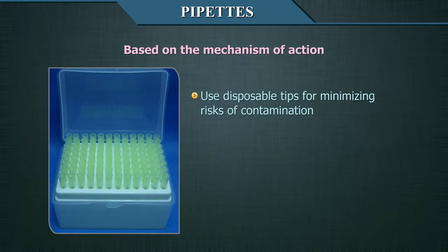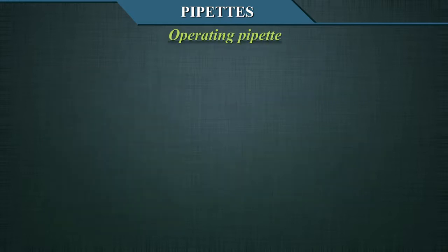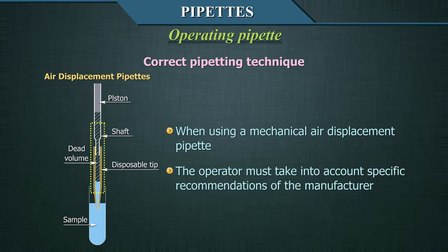It is important to use disposable tips to minimize the risk of contamination, and to exclusively use tips provided by the manufacturer or compatible with the specific pipette, to guarantee correct adjustment to the pipette's body and accurate volume dispensed. We will now describe the correct pipetting technique when using a mechanical air displacement pipette. The operator must take into account the specific recommendations of the manufacturer.